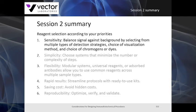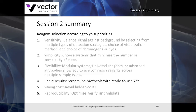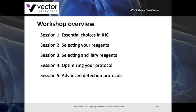In this section, we covered selecting reagents according to your priorities. When sensitivity is important, balance signal against background by selecting from multiple types of detection strategies, with choices of visualization method and chromogens or dyes. When simplicity is important, choose systems that minimize the number or complexity of steps. If flexibility is a priority, design modular systems, use universal reagents, or adsorbed antibodies across multiple sample types. If you need rapid results, streamline protocols with ready-to-use kits. When saving costs, avoid hidden costs in reagents and labor. If reproducibility is important, optimize, verify, and validate all reagents in your protocol. In the next section, we'll cover selecting ancillary reagents to complete your protocol. Thank you for joining us.